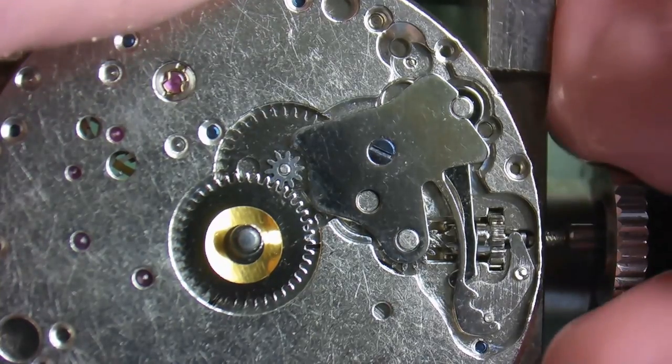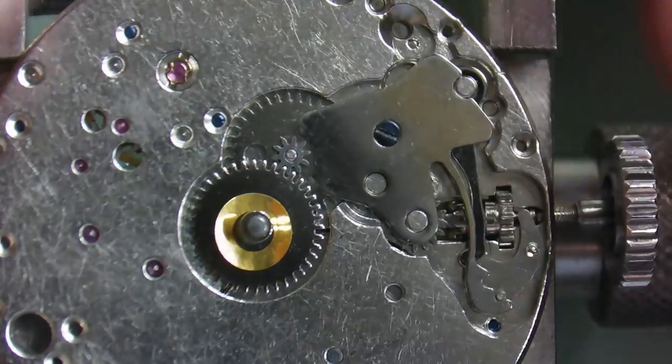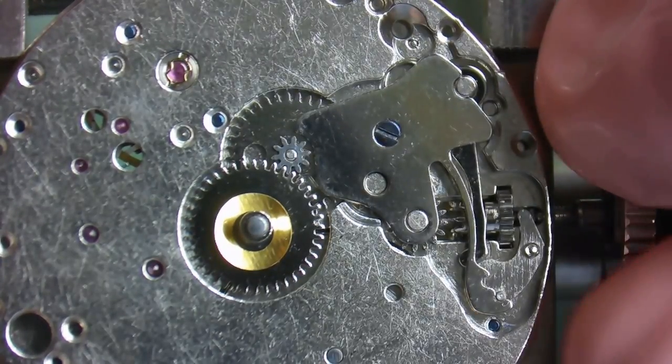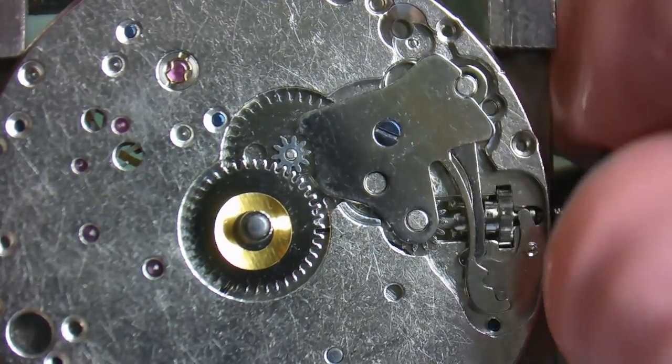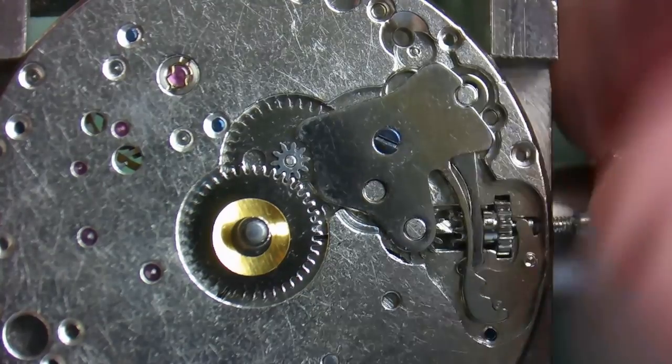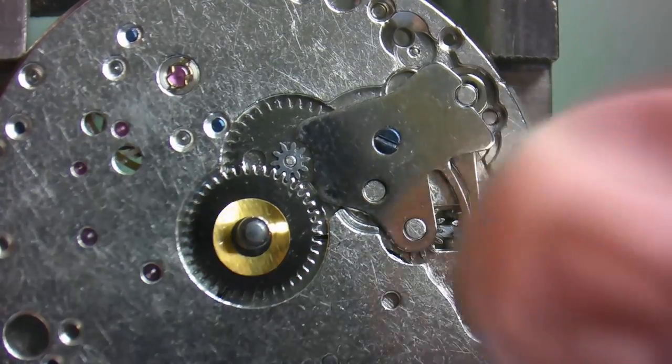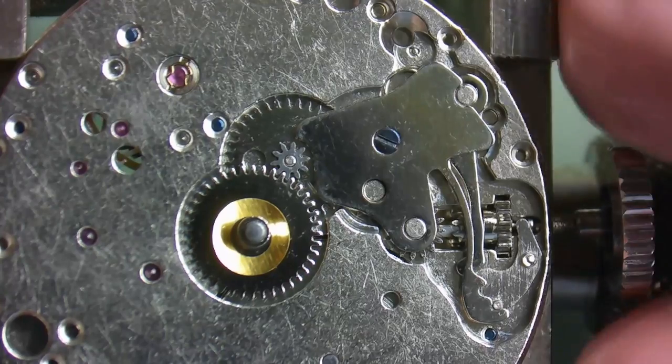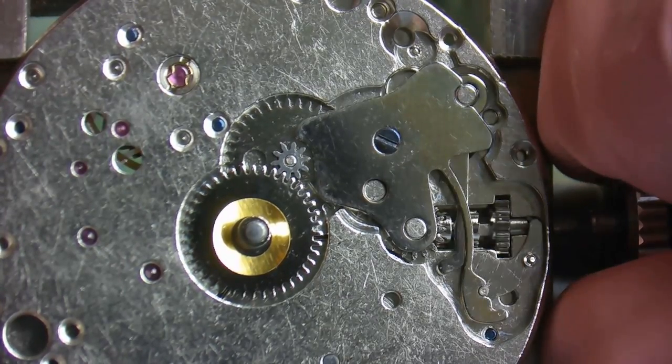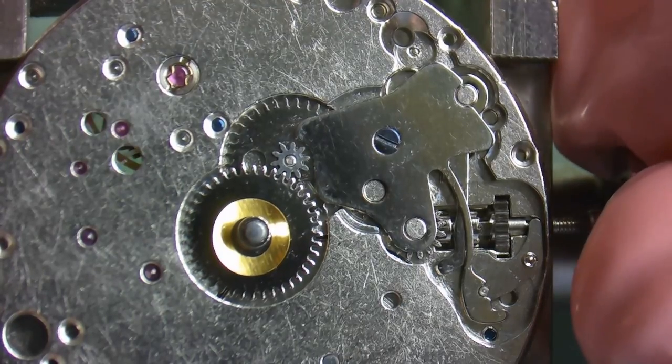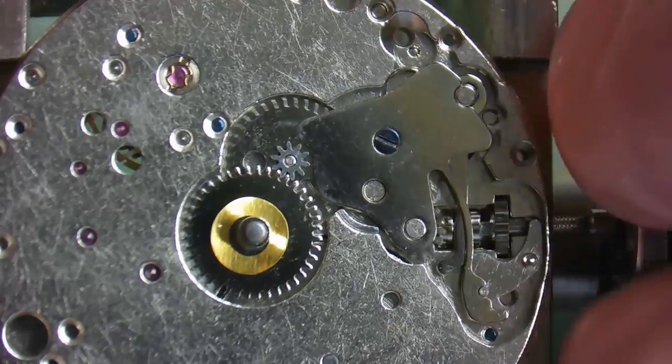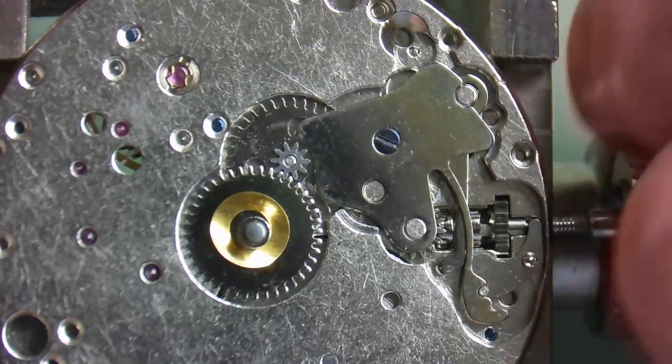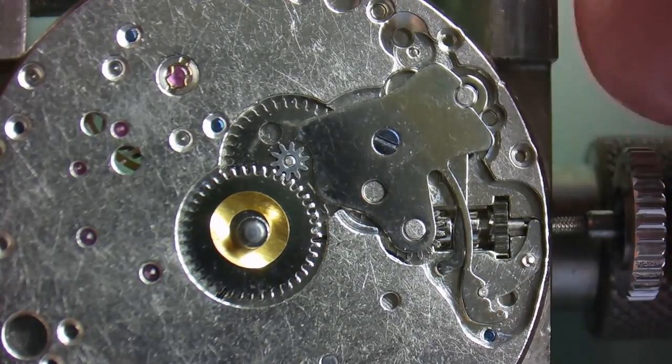Now again, anytime you're assembling any kind of system, after you assemble it you want to check the functions. So we're in the first position, this is the winding position. We can clearly hear the watch winding and you'll also notice the balance started moving. Now on this movement there's only two positions, so you pull it to the second position. Now we're in the time setting position, and our train of wheels and our motion train is working as it should. Sweet.